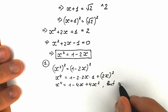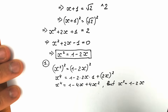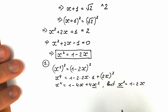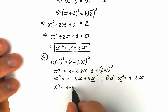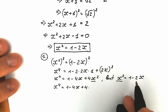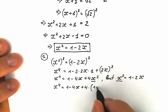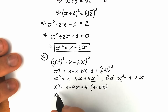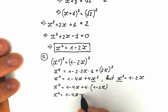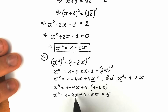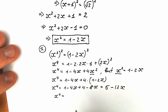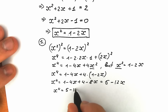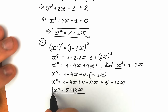Using x squared equals 1 minus 2x, we plug in 1 minus 2x instead of x squared. So x to the fourth power equals 1 minus 4x plus 4 times (1 minus 2x), which gives us 1 minus 4x plus 4 minus 8x. Combining terms: 1 plus 4 is 5, and minus 4x minus 8x is minus 12x. So x to the fourth power equals 5 minus 12x.